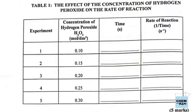In part (c), we complete Table 1 by calculating the rate of reaction. The rate of reaction here is one over time, and they want it calculated to three decimal places for each of the experiments.